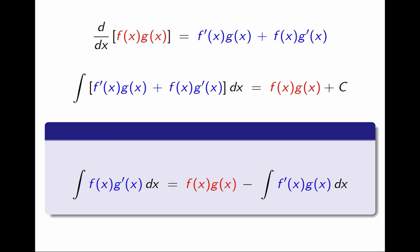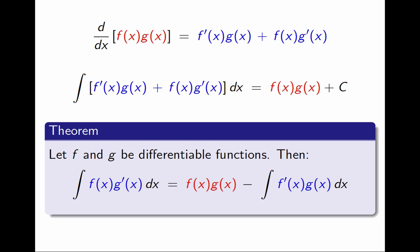I am going to call this a theorem. To write it properly, I need to introduce my notation. f and g are functions, and I need to assume they are differentiable. This is what we call the formula for integration by parts. However, I think it should be called the backwards product rule, because I took the product rule, which is a differentiation rule, and I wrote it backwards to convert it into an anti-differentiation rule.